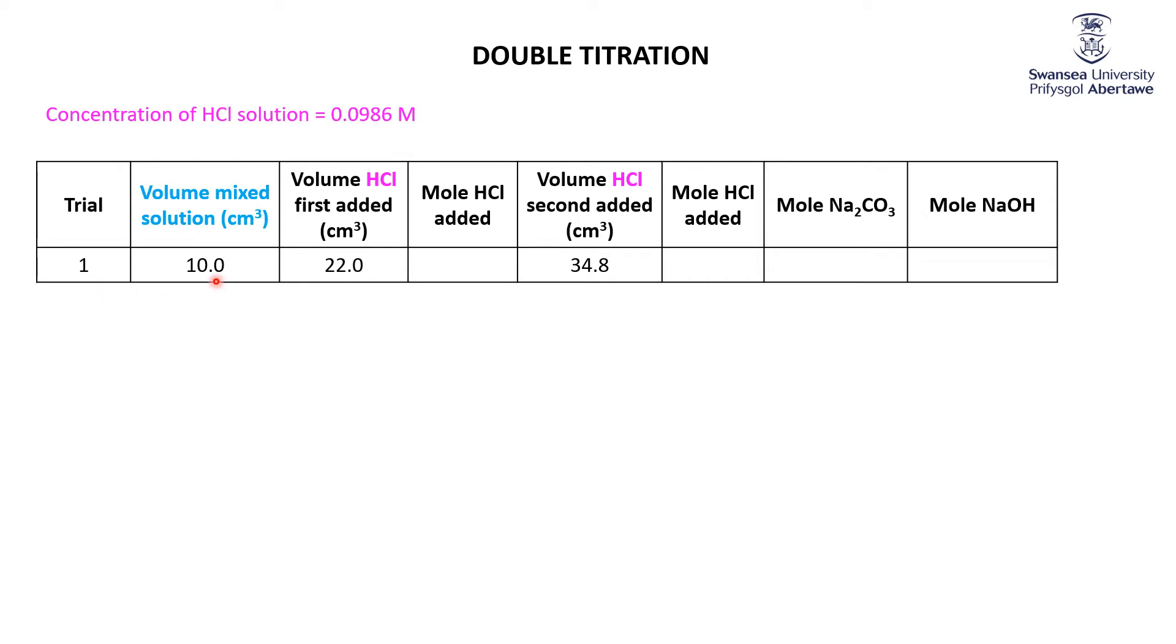Trial number one, I took 10 cubic centimetres for my mixed solution. I added 22 cubic centimetres to get the phenolphthalein change from pink to colourless, and then I added some more. So total volume of 34.8 cubic centimetres to get the methyl orange to go from yellow to orange.